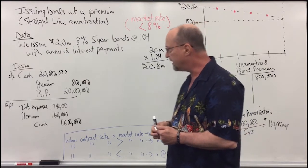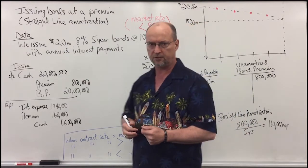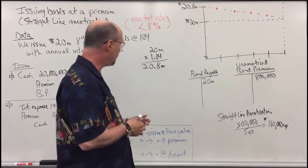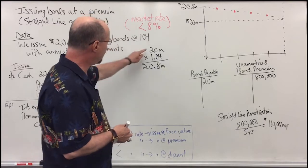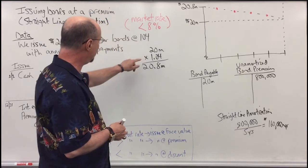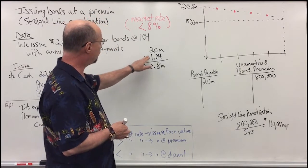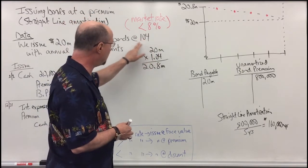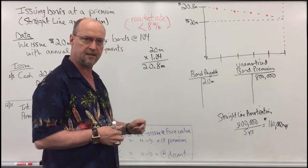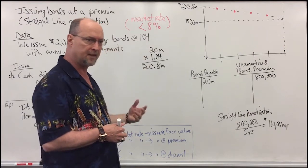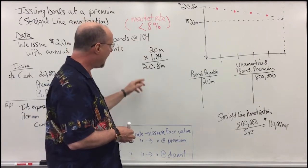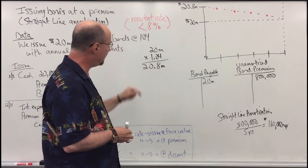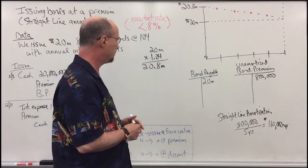On the date of issuance, we calculate the bond value by multiplying the face value of $20 million times 1.04 — which is 104% of the face value — and we're going to raise $20,800,000.